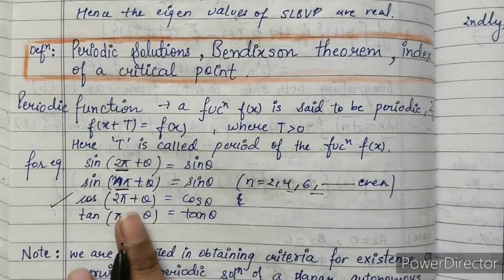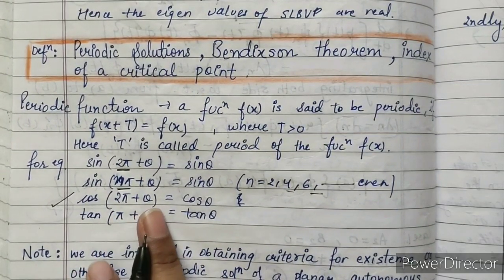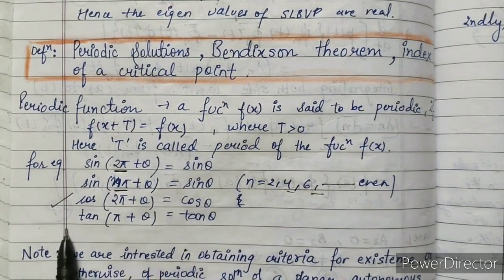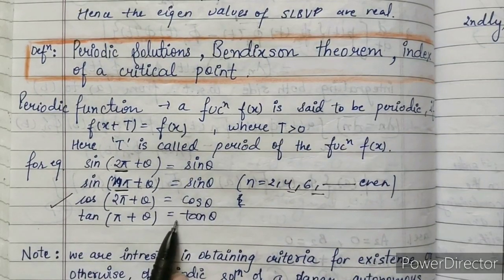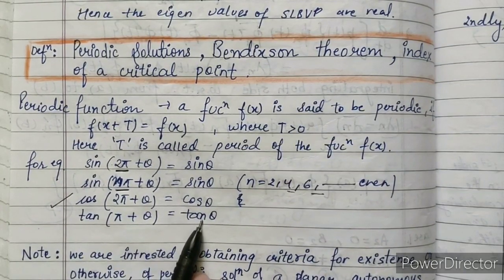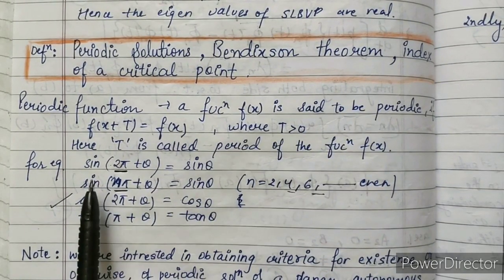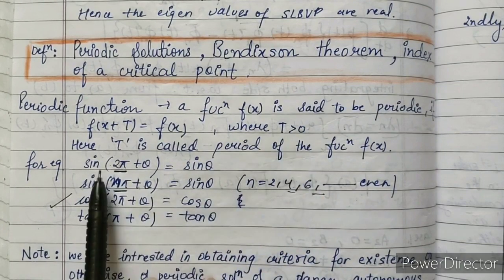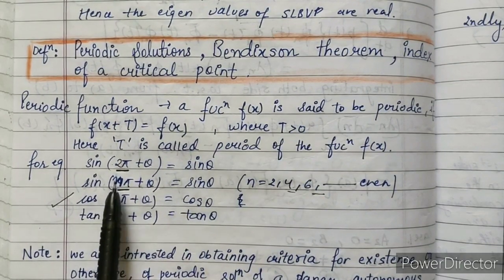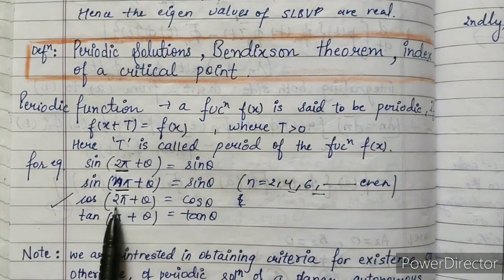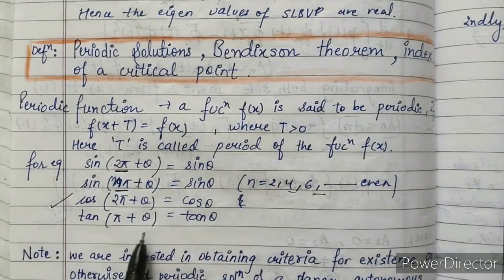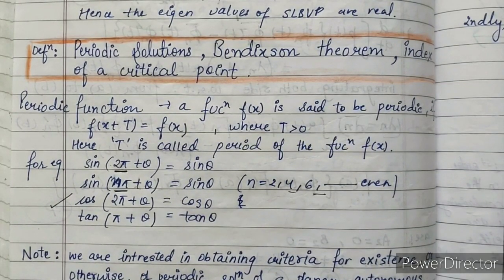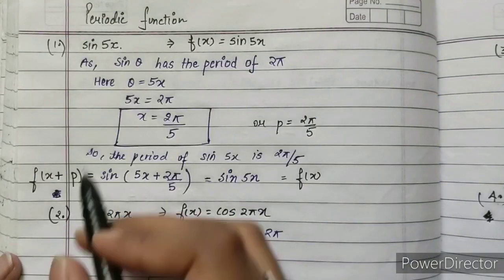The next example is cos(2π + θ) equals cos(θ), and tan(π + θ) equals tan(θ). This means the period of sin(x) and cos(x) is 2π, and the period of tan(θ) is π.